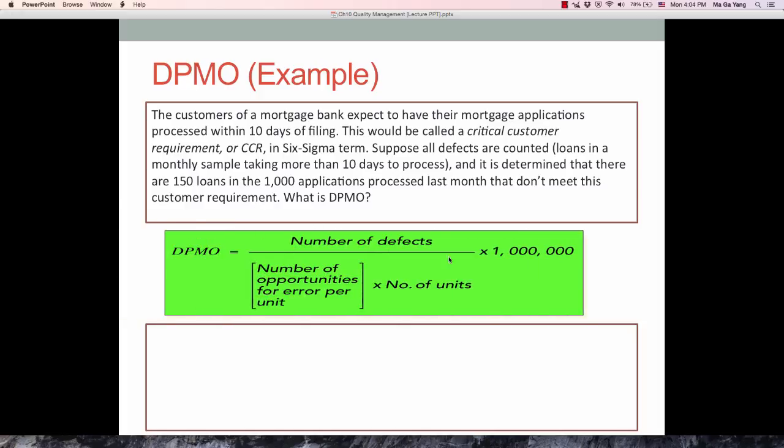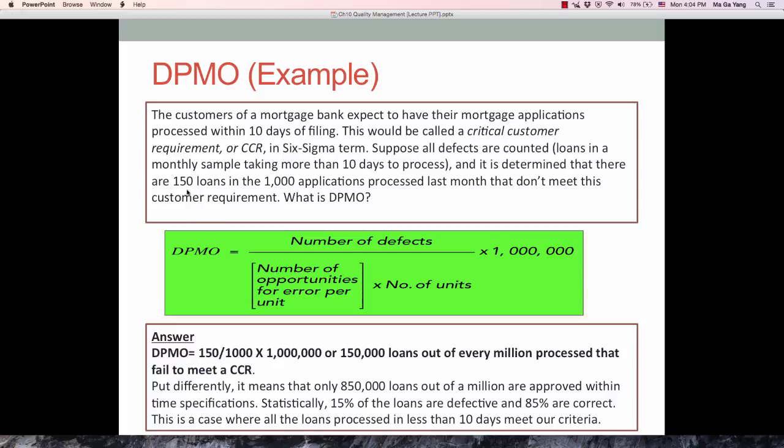Based on this formula, DPMO equals 150, which is the number of defects, divided by 1,000 applications, the number of opportunities for error per unit, times 1, the number of units, times one million opportunities. So, 150,000 loans are defective loans out of every million processed that fail to meet the critical customer requirement. There's a pretty significant defective rate, which is 15%, and 85% are correct. Only 850,000 loans out of a million are approved within time specifications. That's one way of measuring Six Sigma quality.